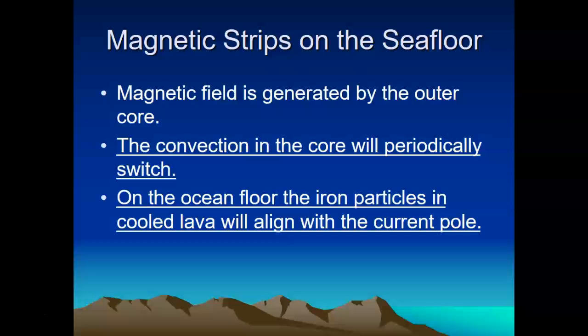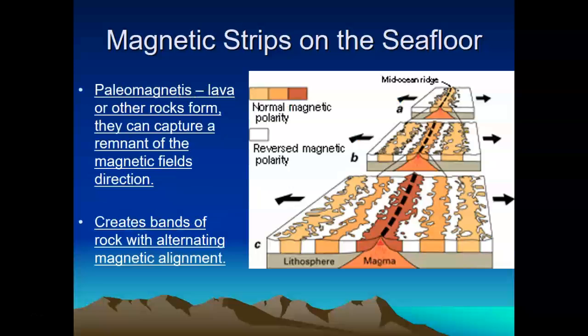Magnetic strips on the seafloor actually mimic and solidify the way our compasses would. Meaning that right now, at the bottom of the ocean floor at the Mid-Oceanic Ridge, as magma comes up and cools off, those iron particles — the north pole of the iron — will point north, just like a compass would. On the ocean floor, the iron particles cool and the lava aligns with the current pole. This reversal process is what we call paleomagnetism.